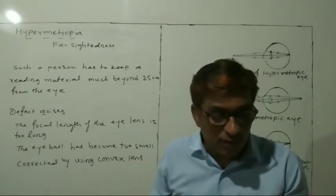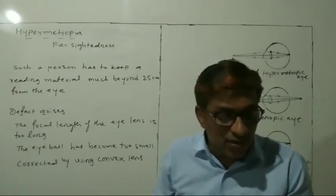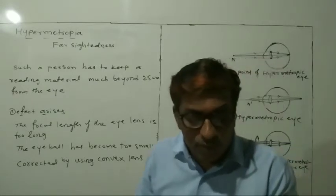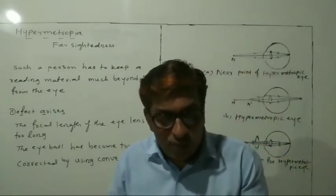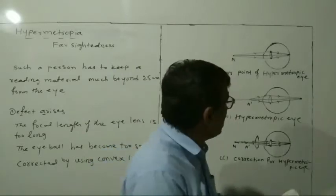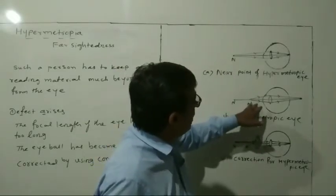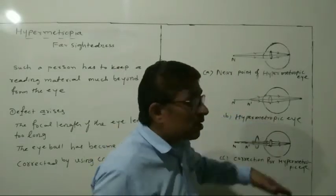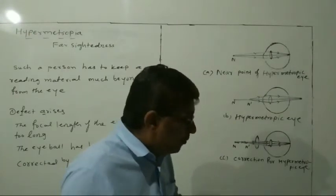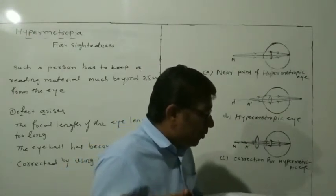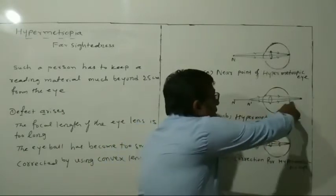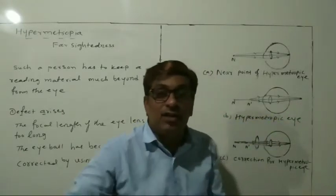This is because the light rays from a closely placed object are focused at a point behind the retina — behind the retina.